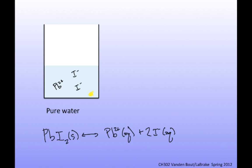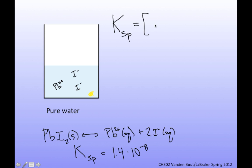If I want to look at the concentration of lead and the concentration of iodide in this solution, I need to know Ksp for lead iodide. Looking that up, Ksp for this compound is equal to 1.4 times 10 to the minus 8. I can relate that to the concentrations at equilibrium in a saturated solution: Ksp equals the lead ion concentration times the iodide ion concentration squared.